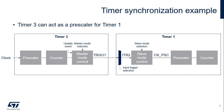The master mode selection field allows selected information to be sent in master mode to slave timers for synchronization: TRGO reset, enable, update, compare. In this example, the update option is selected.